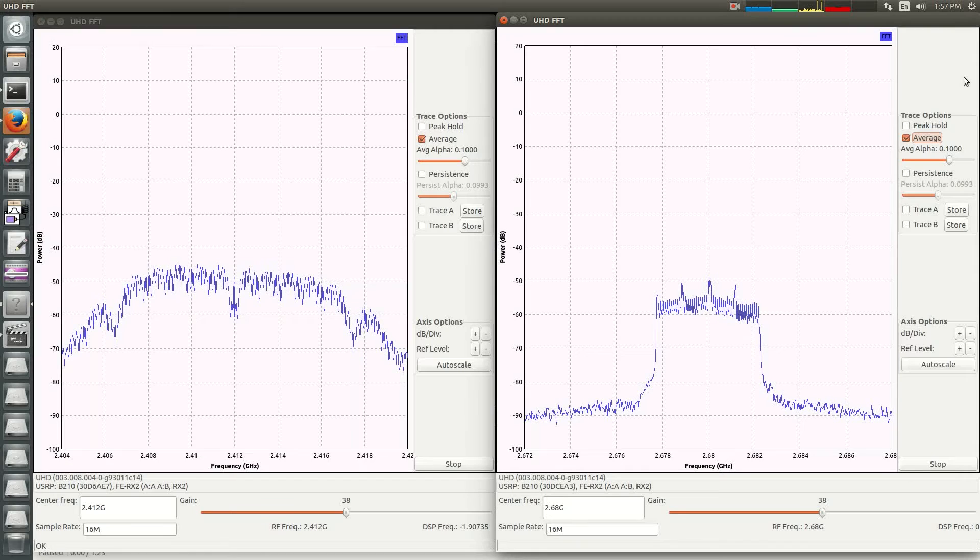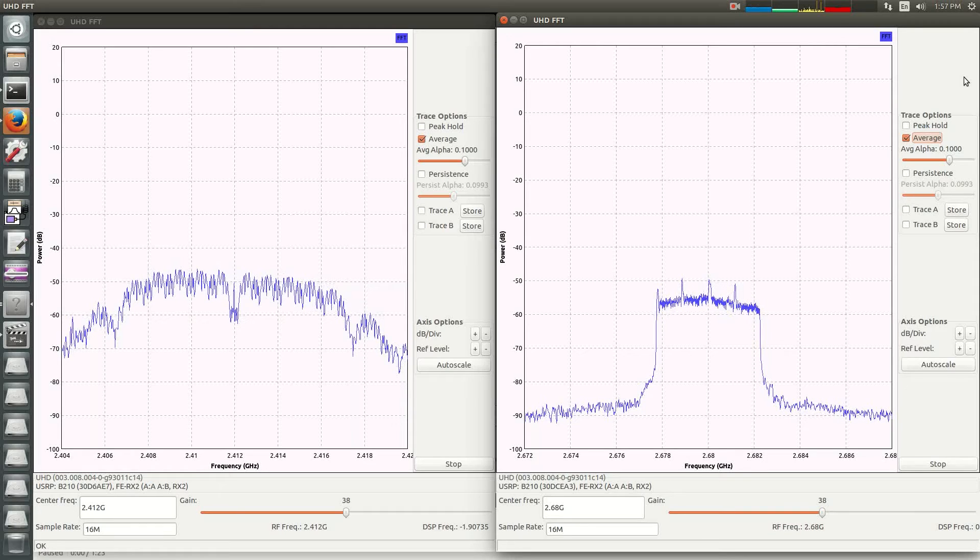On the screen we can see two sections: the left side is for Wi-Fi and the right side is for LTE. In the Wi-Fi part, it is running at 2.412 gigahertz, whereas in LTE it runs at 2.68 gigahertz. Initially you can see there is a constant level of power in both channels.